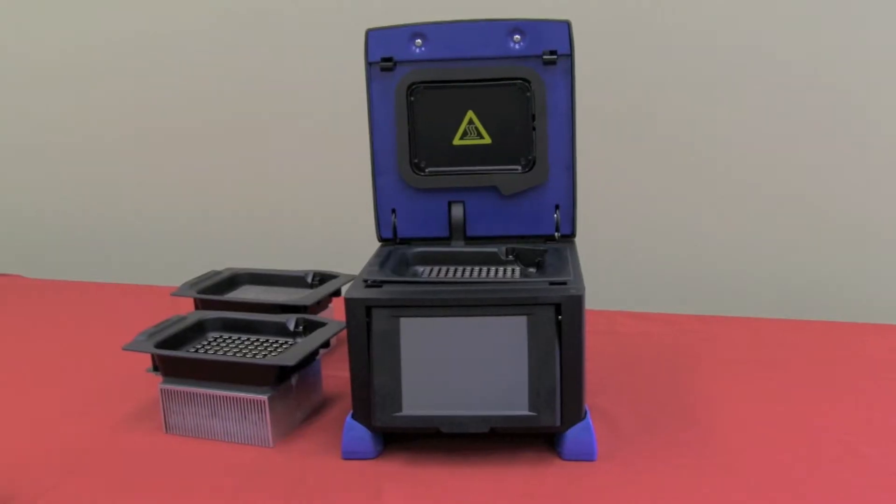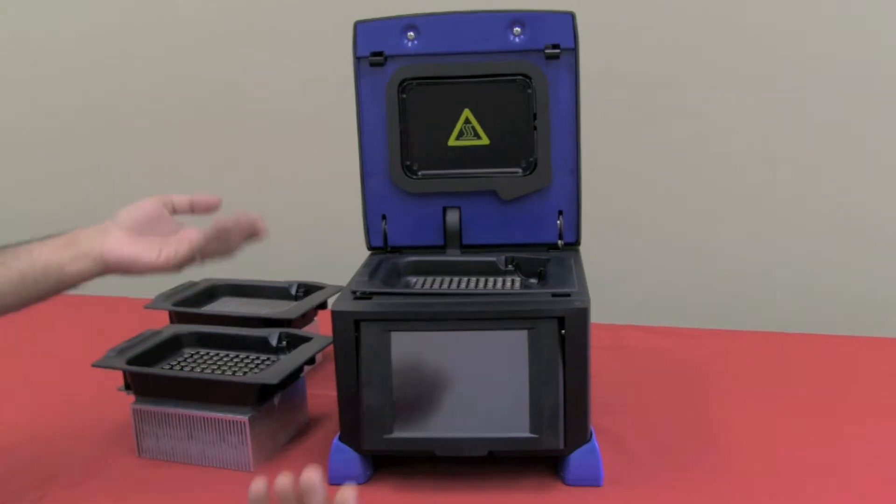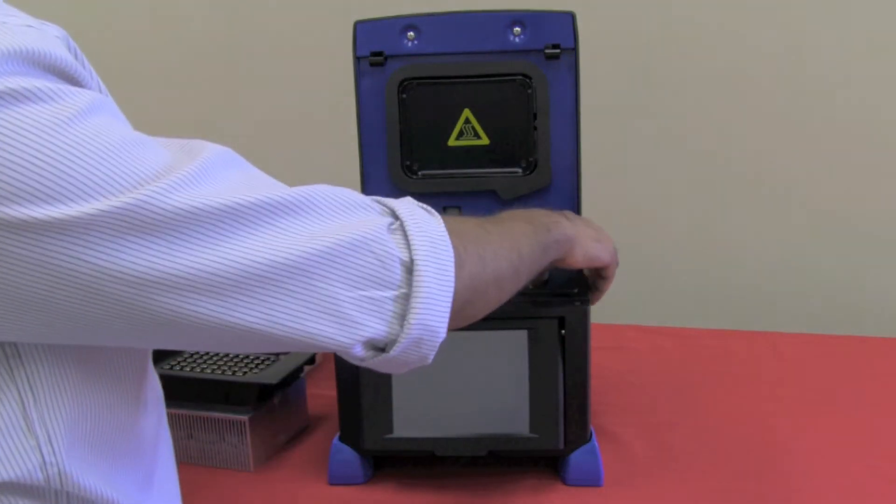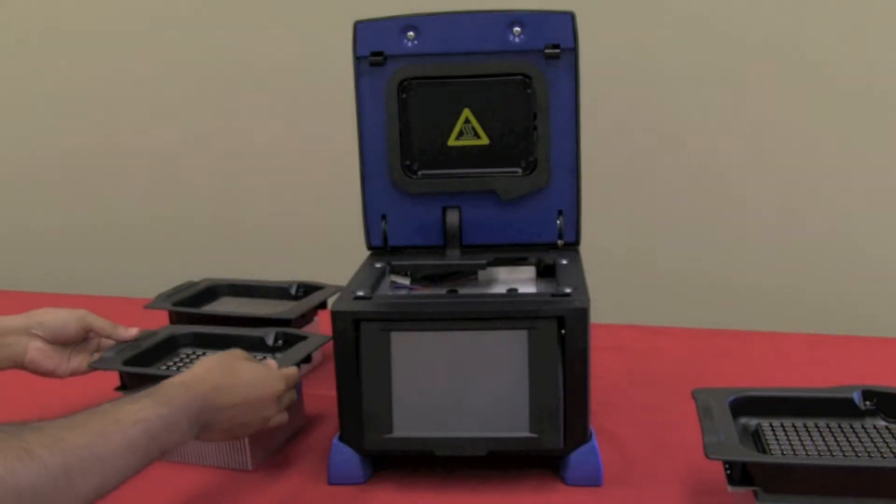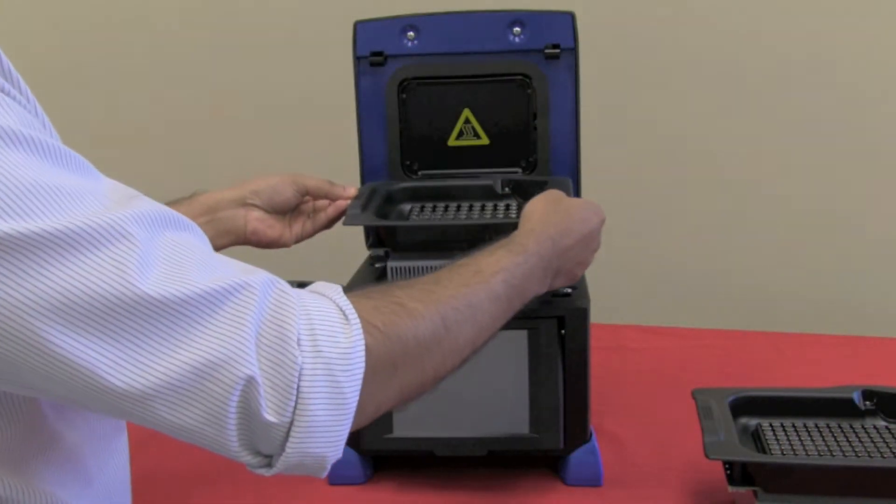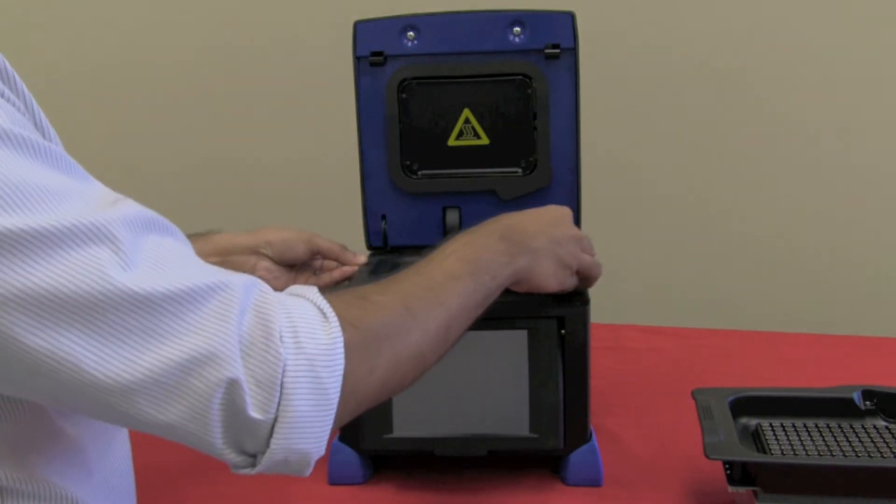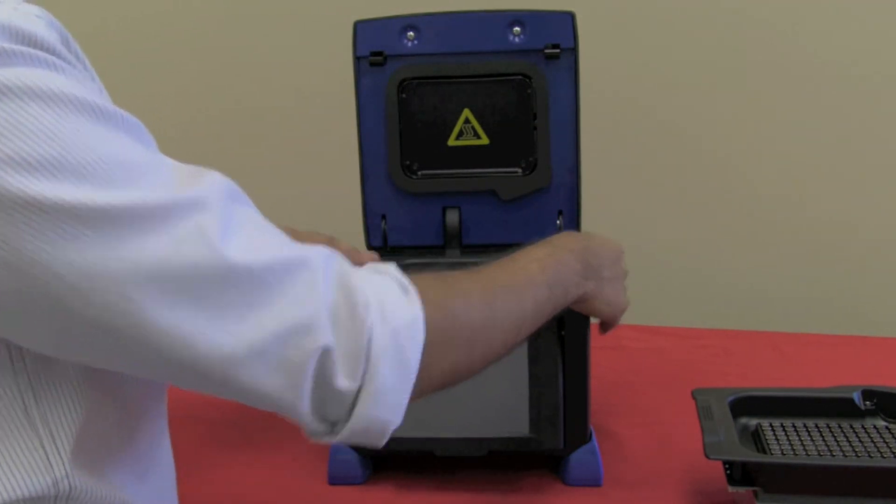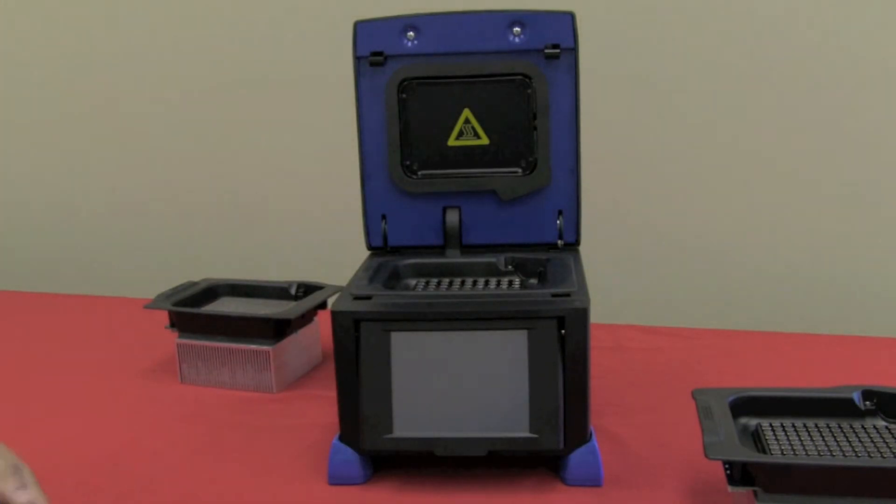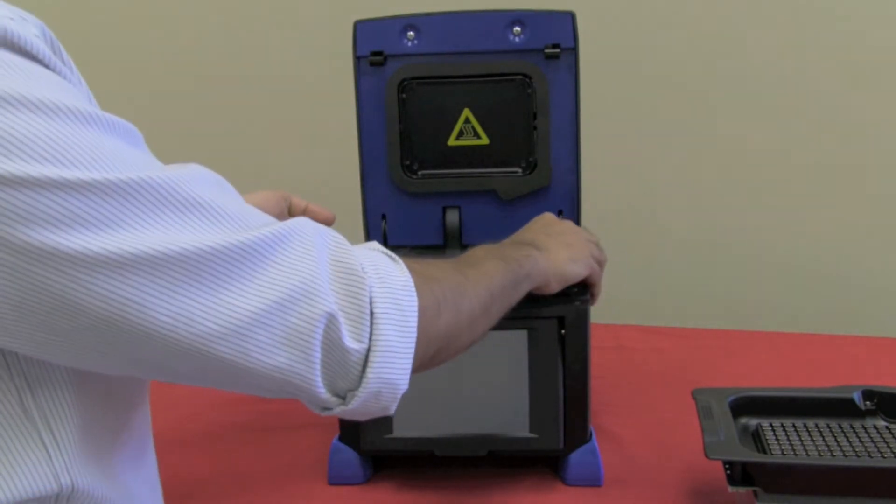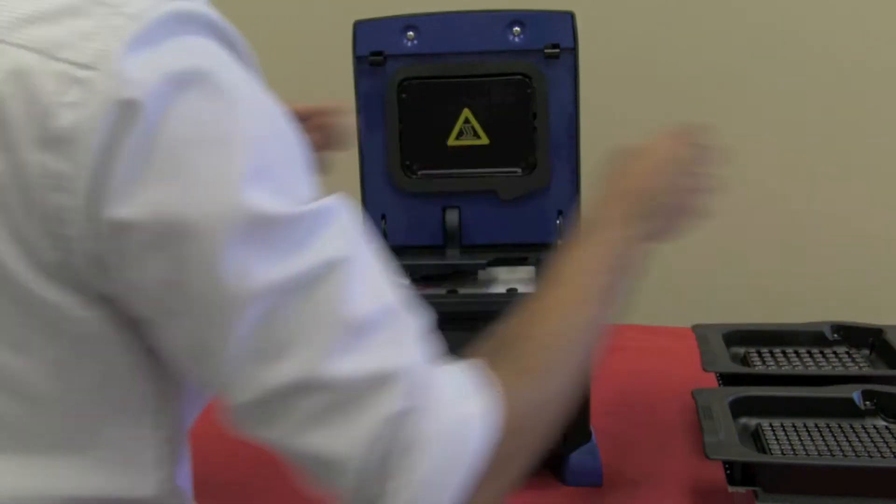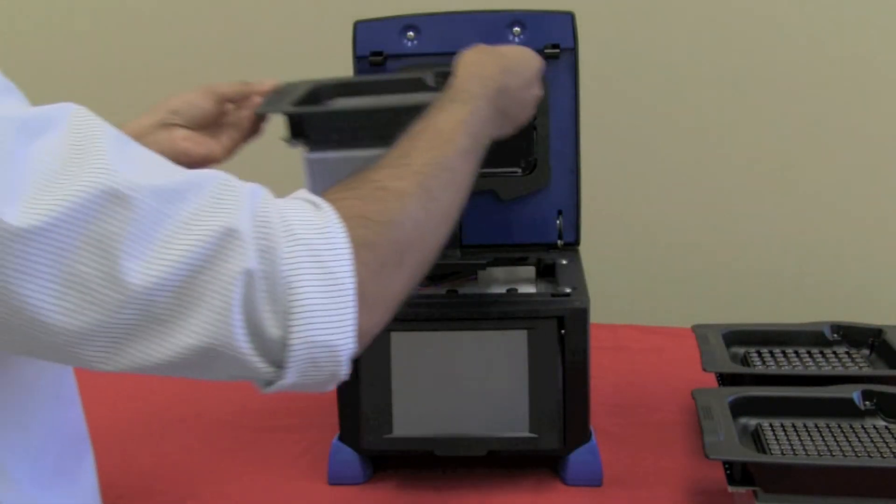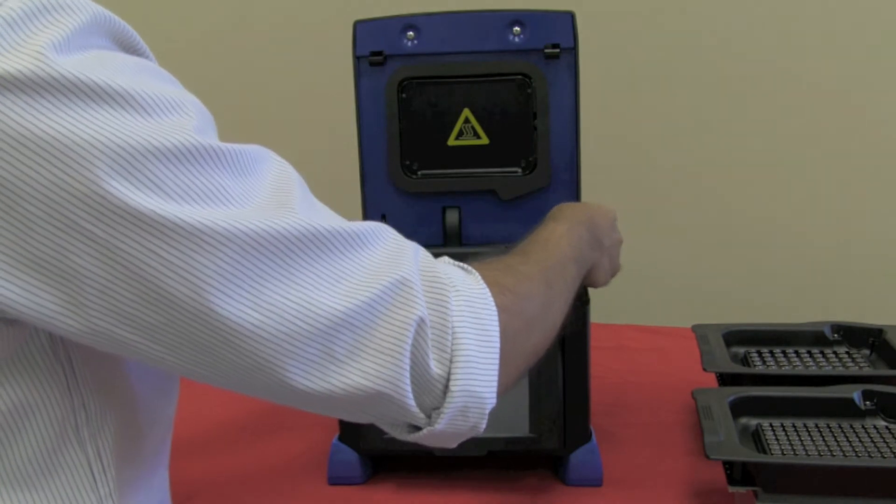I can also demonstrate just how easy it is to replace the blocks on the Amplitronics. It's as simple as this. Remove the block like so and replace the new block here. This is the 56-well block I'm inserting now and I've just removed the 96-well block. That's it, that's all that needs to be done. And again, we can remove the 56-well block there and replace it with the 384-well block there. It really is that simple.